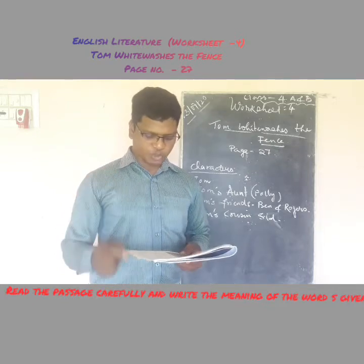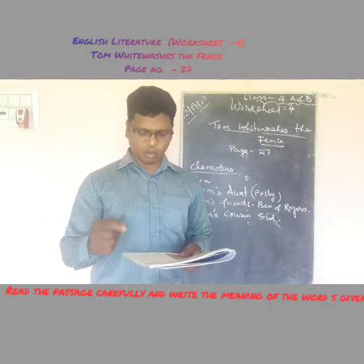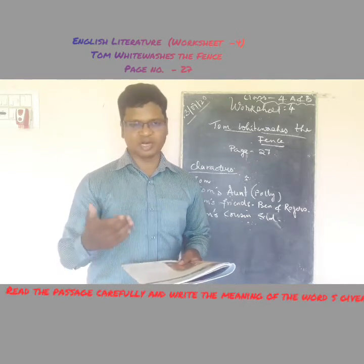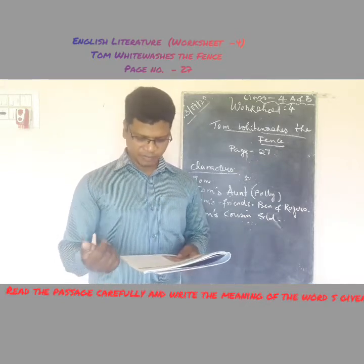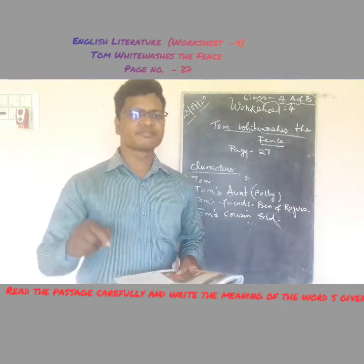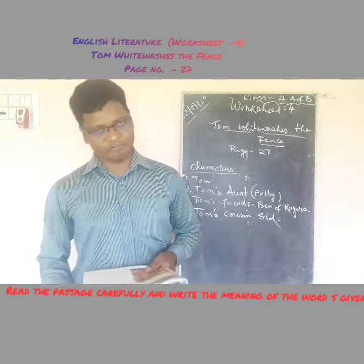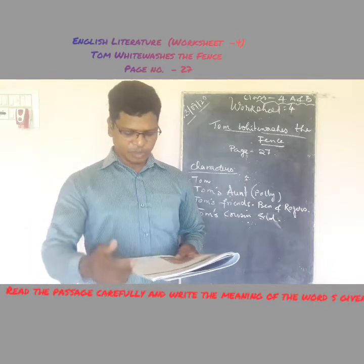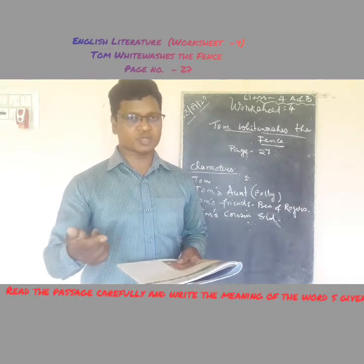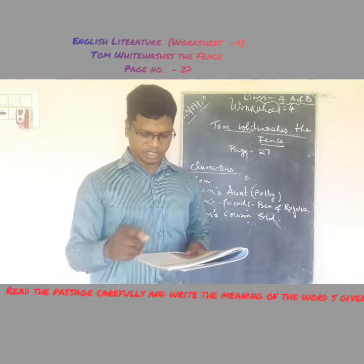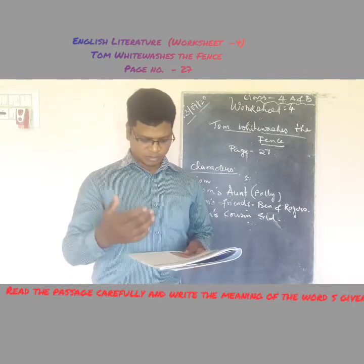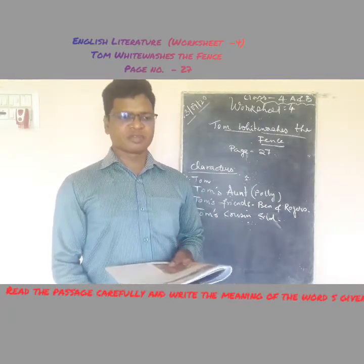'I want you to whitewash the fence today,' Aunt Polly said. This is an order. She wants Tom to whitewash the fence by today itself. 'But we are planning to go swimming,' Tom started — but he was not allowed to finish his sentence.